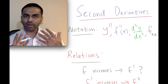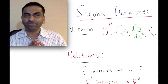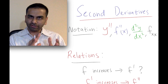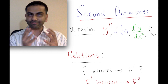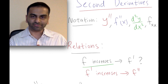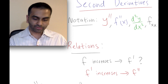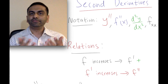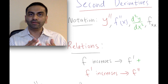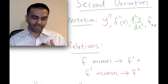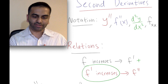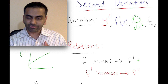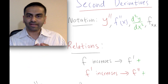So what does it imply about your function if you know something about your second derivative — if you know your second derivative is positive or increasing? Let's back up and refresh on the relationship between a function and its derivative. If a function is increasing, that means its slope is positive, so its derivative is positive. That same relationship holds between the first and second derivative: if f prime is increasing, then its slope — f double prime — will be a positive number.